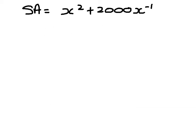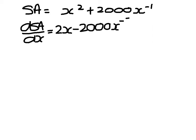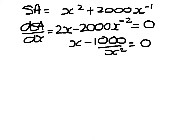We've written the surface area using indices: x squared plus 2000 x to the minus 1. For maximum problems we differentiate. So that would be 2x minus 2000 x to the minus 2, and I'm going to put that equal to 0 because it is a turning point. I can divide by 2, so x minus 1000 over x squared has to equal 0. x equals 1000 over x squared, so x cubed is 1000.